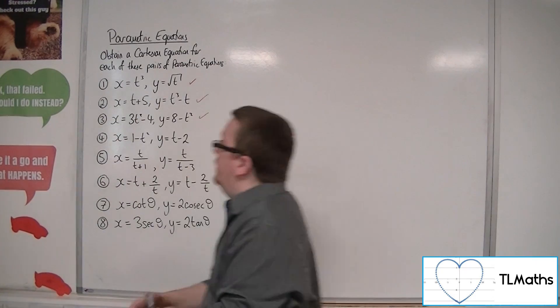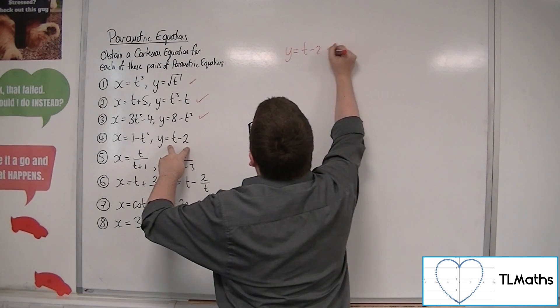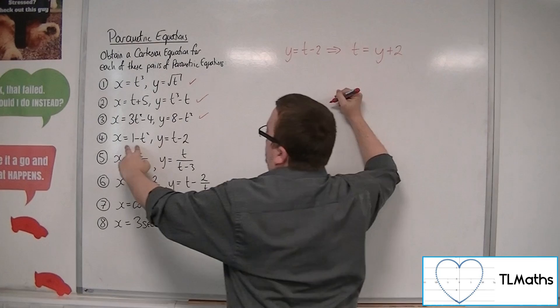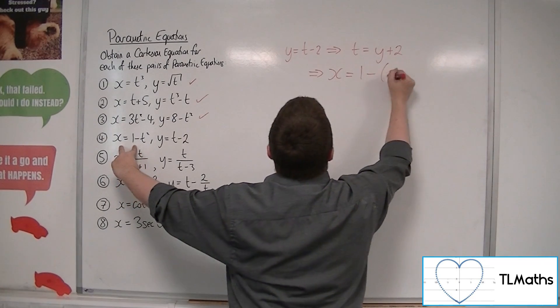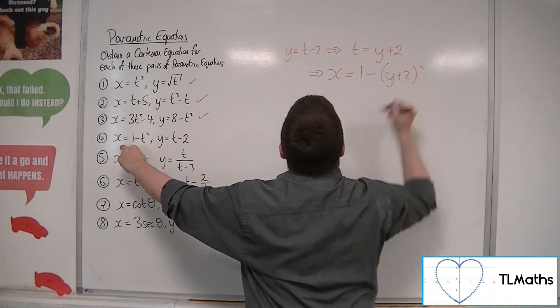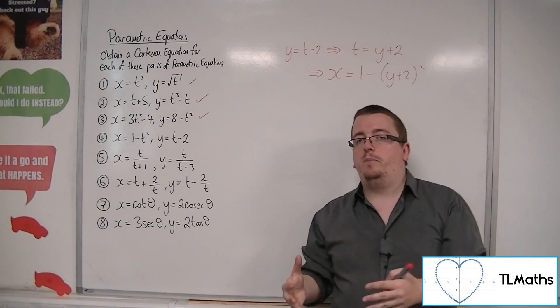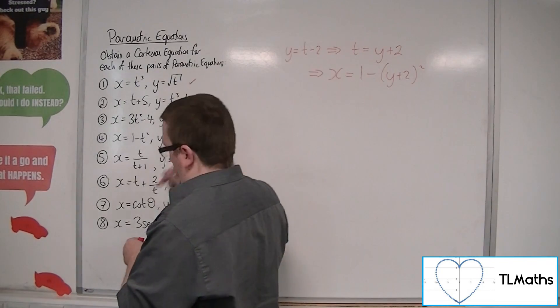So it might be easier to do it the other way around. So instead, if I take the y equals t minus 2 and rearrange that to get t is equal to y plus 2, I can then substitute that into the other equation. And I get something that's much easier to work with. Okay. I don't have the plus minus. I don't have the square root. Okay. So that's number 4.